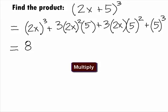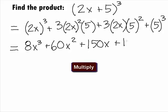When we multiply these out, we get our final answer of 8x cubed plus 60x squared plus 150x plus 125.